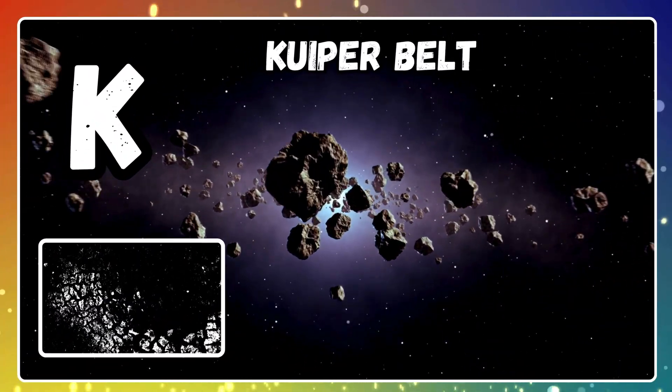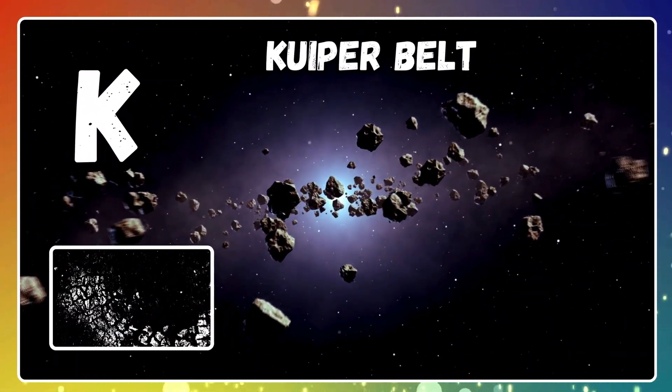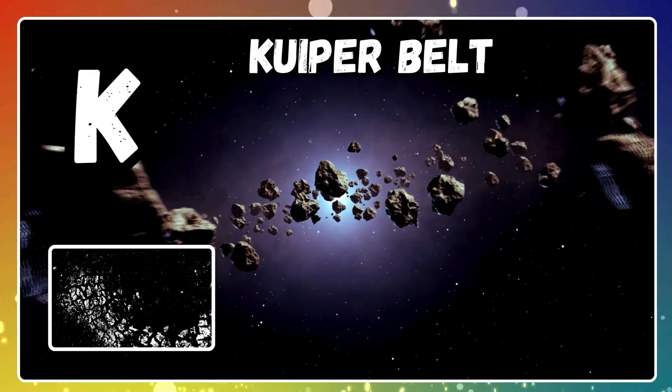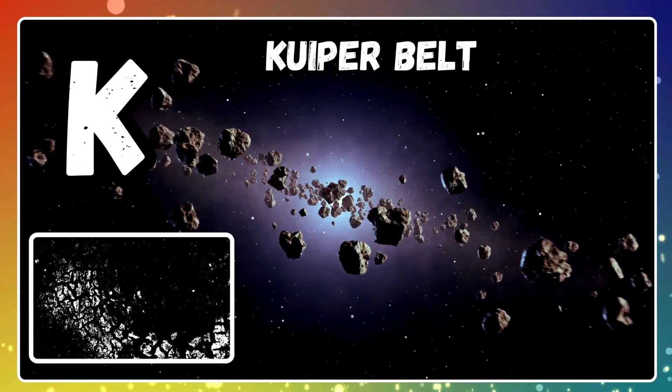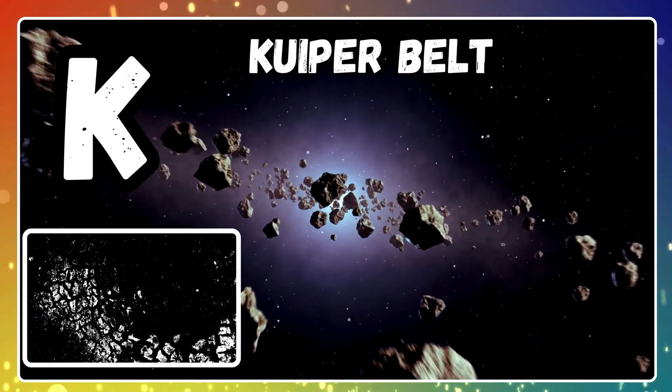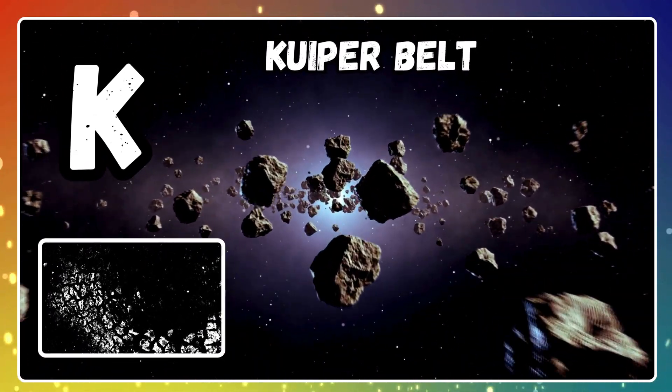K is for Kuiper Belt. The Kuiper Belt is a space zone full of icy objects.